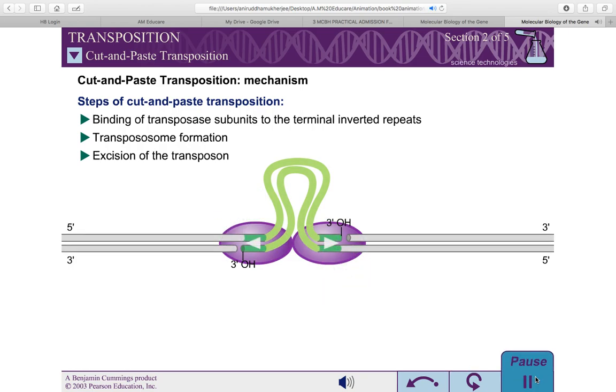For other transposons, the transposase catalyzes attack of the uncut ends of the DNA strands by the 3' hydroxyls directly opposite them on the other strand. This reaction forms DNA hairpin intermediates. The two hairpin ends are subsequently hydrolyzed by the transposase.